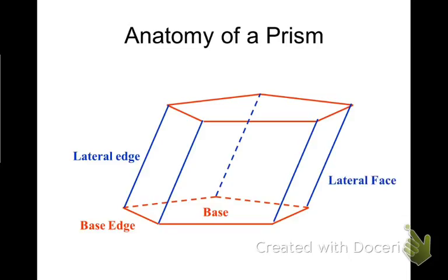The lateral face is the polygon that is the face of the prism, and then we have the height, or the altitude, of the prism. These are the parts of the prism.